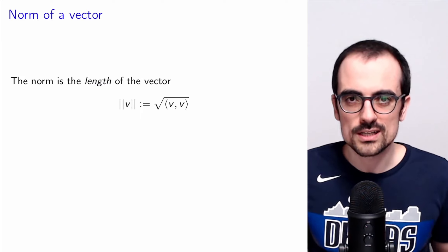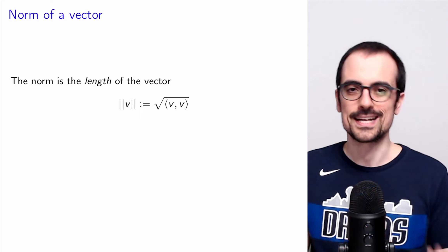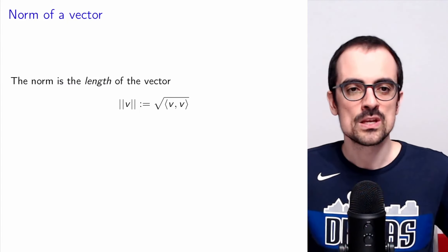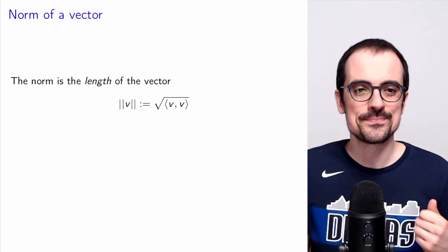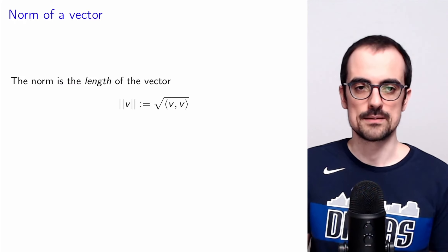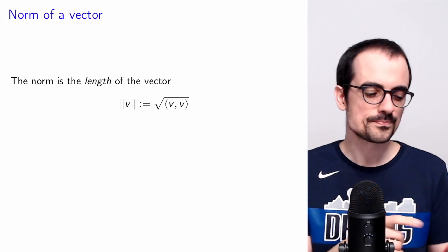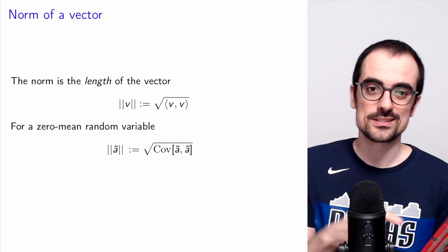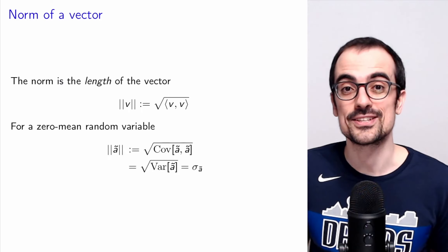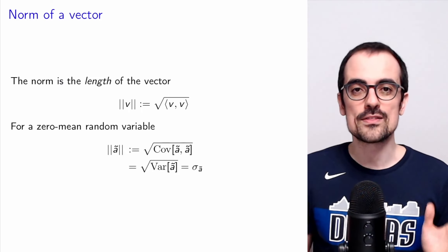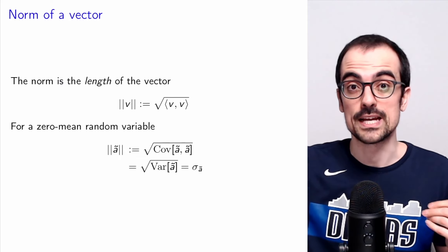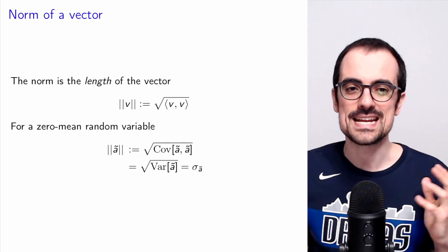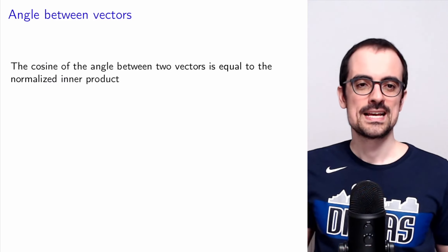Now we can reap the rewards of this work. Since random variables form a valid vector space and covariance is a valid inner product, we can define the length of a random variable. In general, the length of a vector is the square root of the inner product of the vector with itself. For a random variable, we take the covariance of the random variable with itself and take a square root — that's the square root of the variance, which equals the standard deviation. So in this space of random variables, the length of a random variable is its standard deviation.